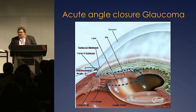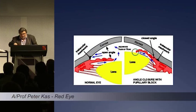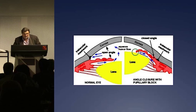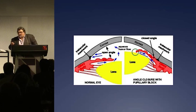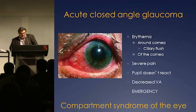Aqueous humour is produced by the ciliary body, circulates through the posterior chamber, enters the anterior chamber through the pupil, then passes through the trabecular meshwork back into the bloodstream. In narrow-angle glaucoma, you get increased pressure. This can damage the optic nerve and all parts of the eye. In open-angle glaucoma the outflow is partially patent; in closed-angle glaucoma there's full closure and no reabsorption. He had erythema, a ciliary flush, severe pain, a fixed pupil, and decreased visual acuity. This is an emergency.